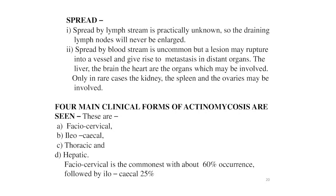Spread of actinomycosis via the lymph stream is practically unknown, so draining lymph nodes are never enlarged. Spread by bloodstream is uncommon, but a lesion may rupture into vessels and give rise to metastasis in distant organs. The liver, brain, and heart are organs that may be involved; only rarely are the kidney, spleen, and bones involved.